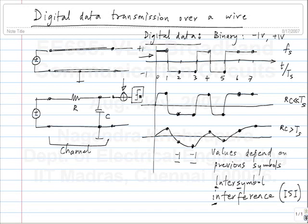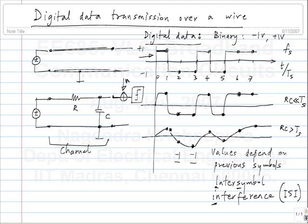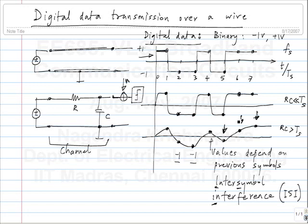Depending on the variance of the noise N and the strength of the transmitted symbol, you have a certain probability of error. The signal strength is reduced in some cases quite drastically. If it is a 1 followed by a minus 1, the amplitude for minus 1 is quite small. Similarly if it is minus 1, 1, minus 1, the amplitude for the middle plus 1 is small. If you have the same noise added to all symbols, the probability of error is high for those symbols. It depends on the signal to noise ratio.